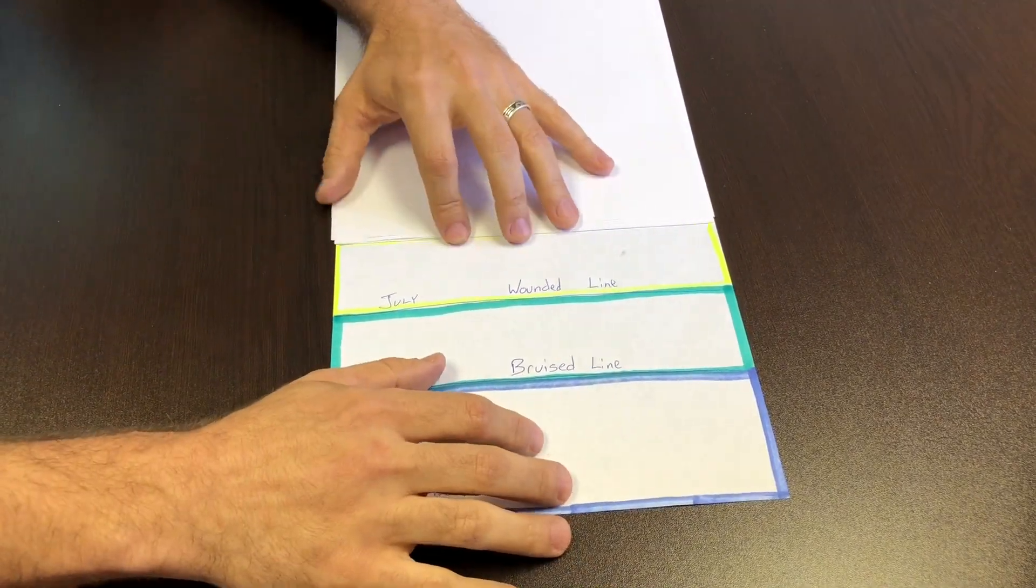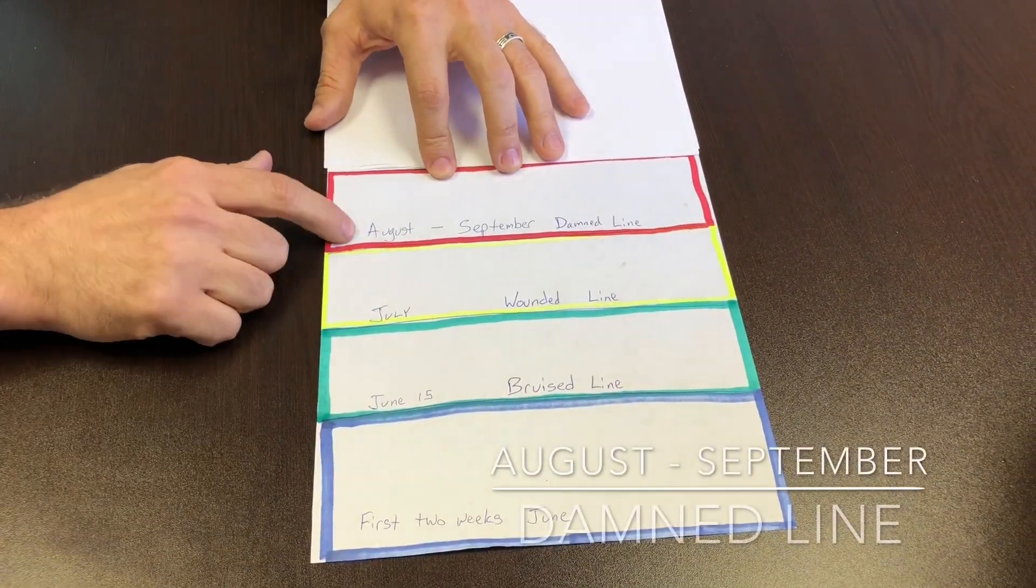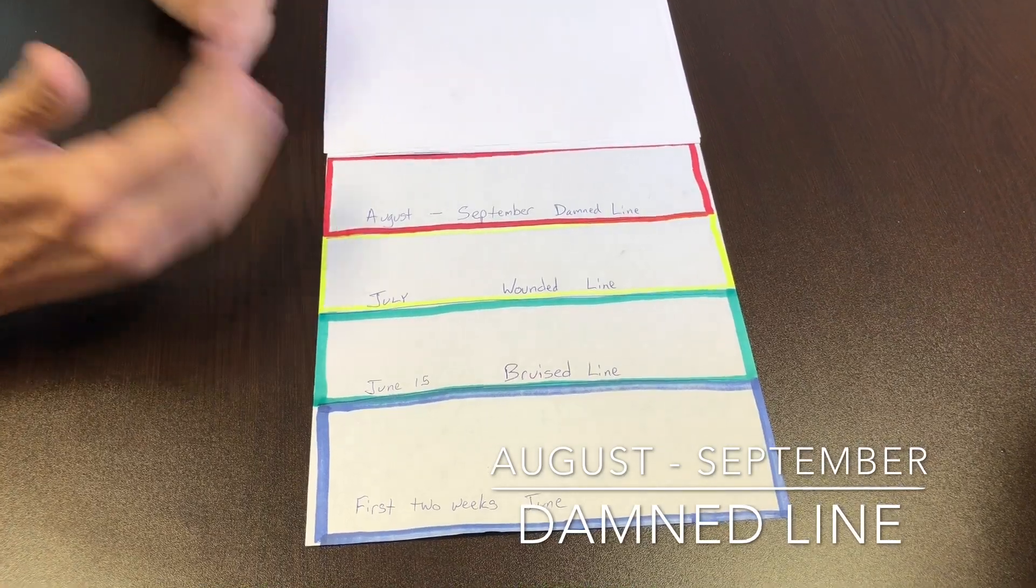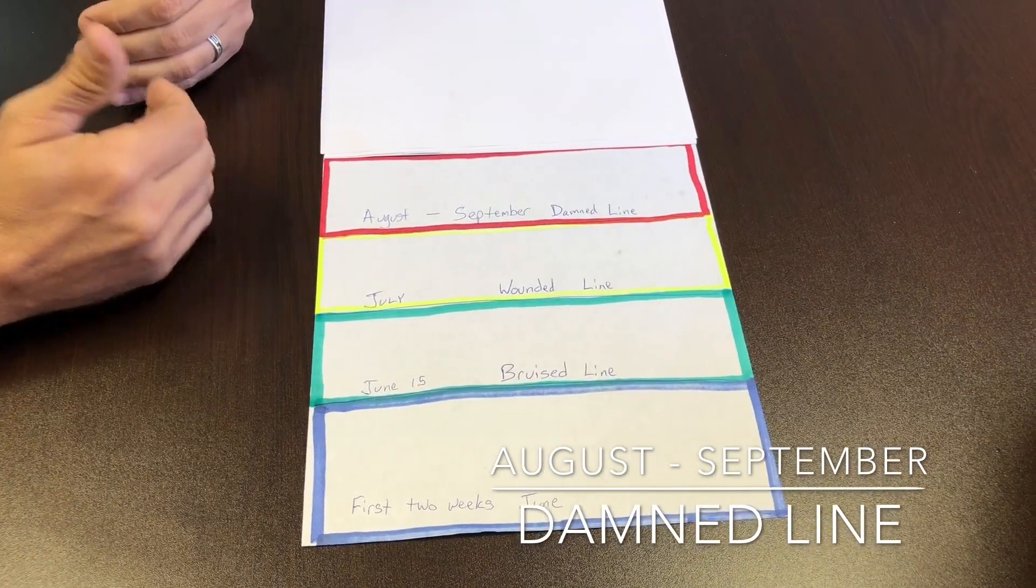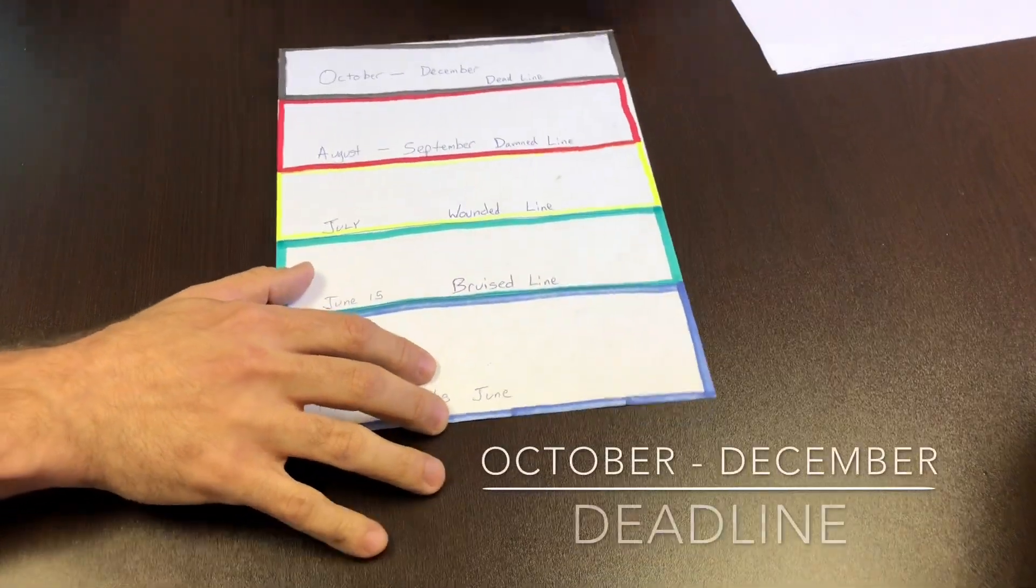After that we're going to call it not the deadline yet but the damned line. So if you apply in August or September you are significantly hurting your chances. And you better make up for it by having great numbers for the schools you're looking to apply to. And then sure at the end of all that is the actual deadline.